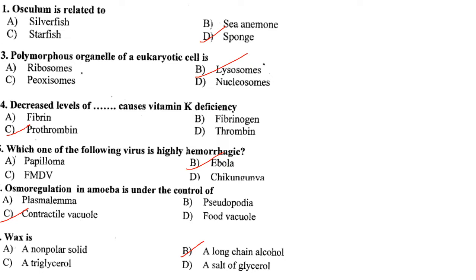Osmoregulation in amoeba is under the control of the contractile vacuole. Answer is option C. Wax is a simple lipid which is an ester of long chain alcohol and fatty acid. As per the option it is a long chain alcohol. Answer is option B.